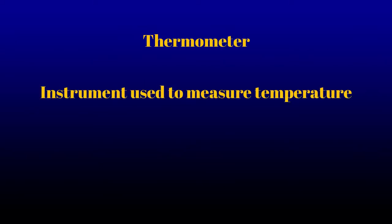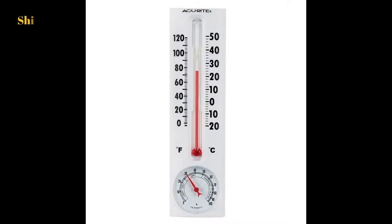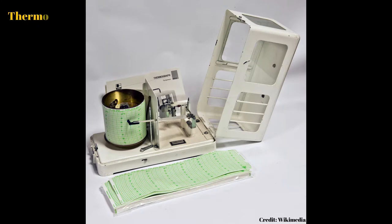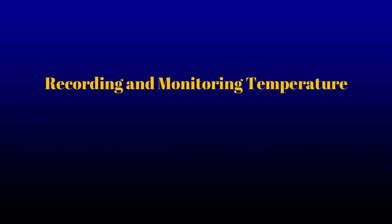There are two kinds of thermometers. A sheltered thermometer, which is the most common kind — the kind we usually see in our house — is a glass tube with mercury in it. The second is a thermograph, which is a cylinder with graph paper with increments for the 24 hours. Modern versions are digital, so there's no paper.